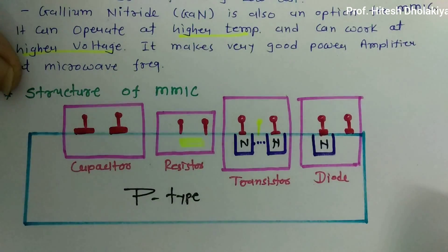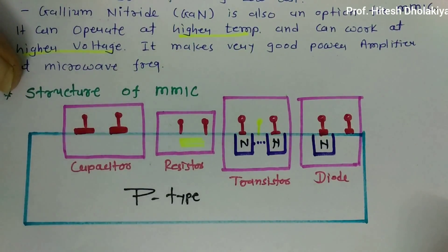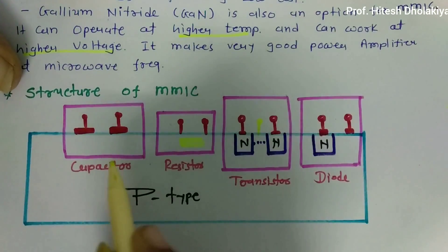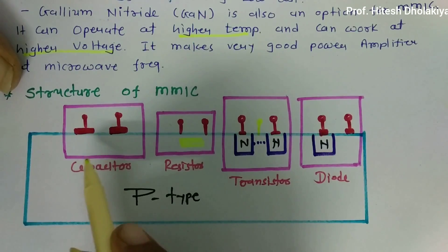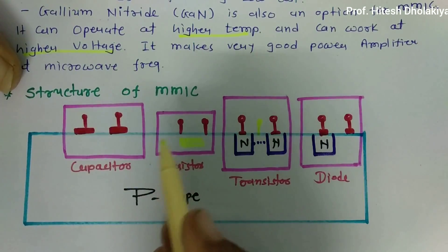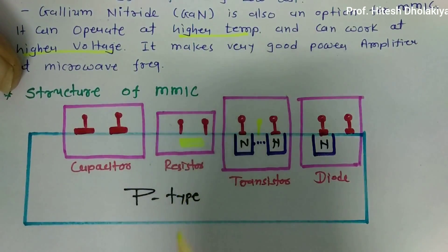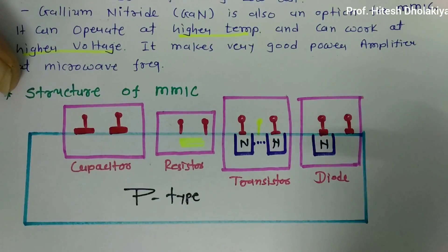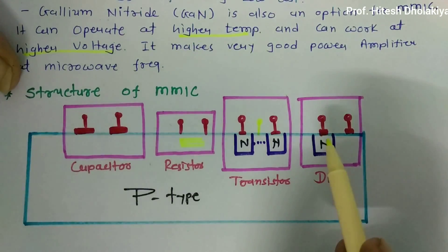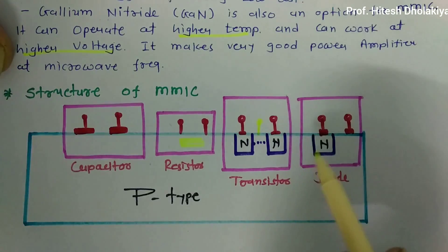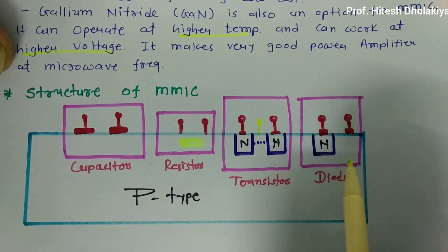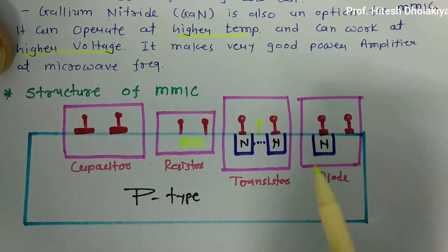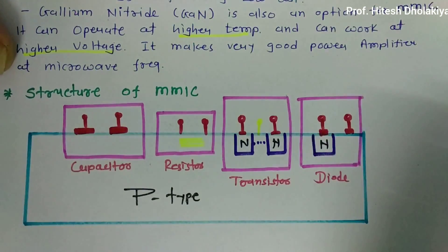When dealing with RF or microwave integration, many challenges arise. A capacitor will not behave as a simple capacitor at microwave frequencies — there will be an equivalent circuit. Similarly, resistors and active elements have equivalent circuit behavior at high frequencies. It is very difficult to design RF and microwave circuits, and understanding MMIC fabrication requires extreme amounts of practice and expertise.